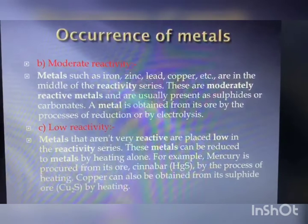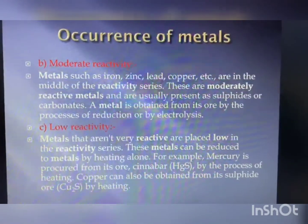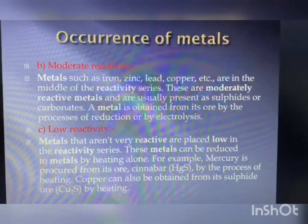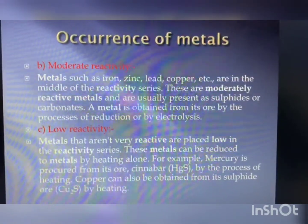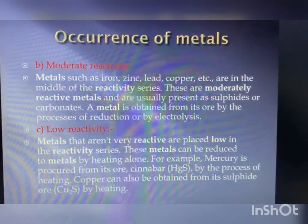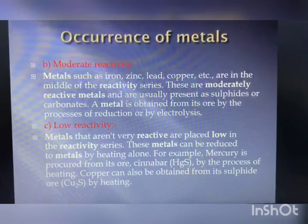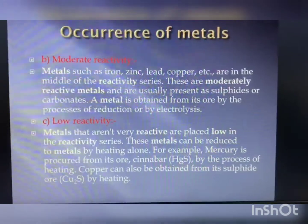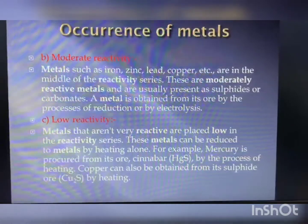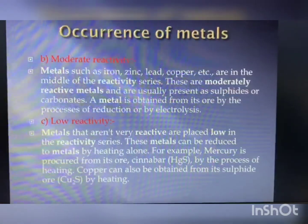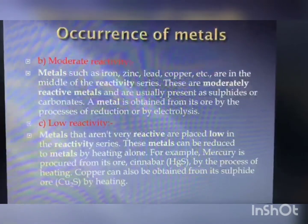Metals of low reactivity: metals that are not very reactive are placed low in the reactivity series. These metals can be reduced to metals by heating alone. For example, mercury is procured from its ore cinnabar (HgS) by the process of heating. Copper can also be obtained from its sulfide ore by heating.